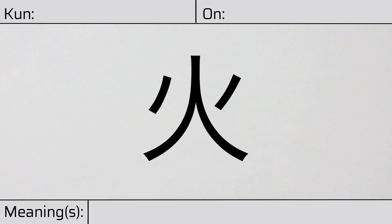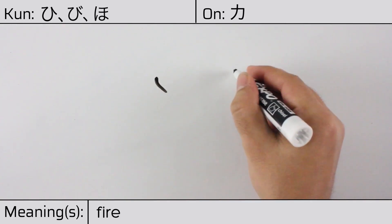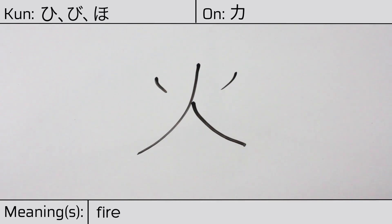Welcome to this lesson on Japanese kanji. Today, we'll be discussing this character. This kanji has kunyomi or Japanese readings of hi, bi, or ho, and it has onyomi or Chinese reading of ka. This character has the meaning fire. Here is the stroke order.